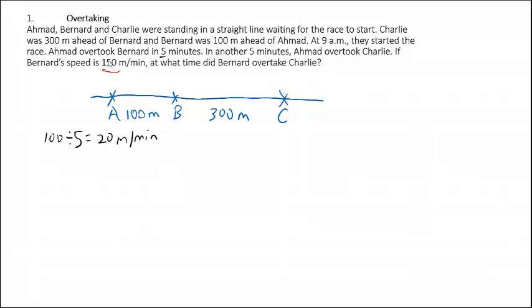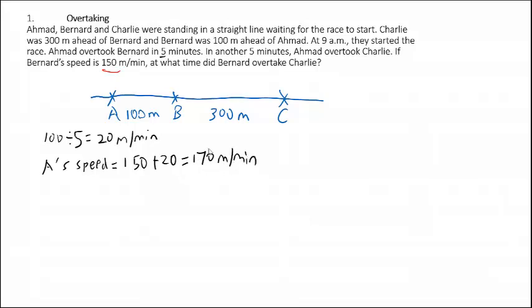Since Bernard's speed is 150m per minute, we can find Ahmad's speed. Ahmad's speed is 150 plus 20, which gives us 170m per minute. This is the speed of Ahmad.